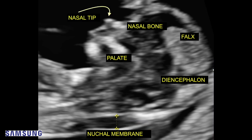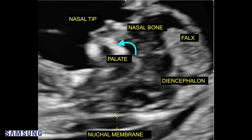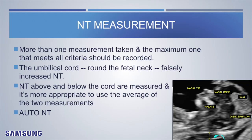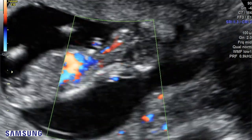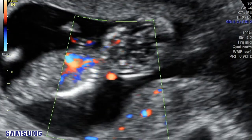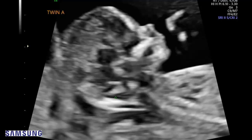In the nuchal section, the structures visible are: the nasal tip, the nasal bone, the pharynx as an echogenic structure, the diencephalon as a lucency, the palate, and the nuchal membrane posteriorly. More than one measurement should be taken and the maximum one meeting all criteria recorded. Sometimes there may be an umbilical cord around the neck, which can falsely increase the NT — ideally measure NT above and below the cord and take the average. Some machines now offer auto NT measurement, placing a box for automatic maximum measurement.